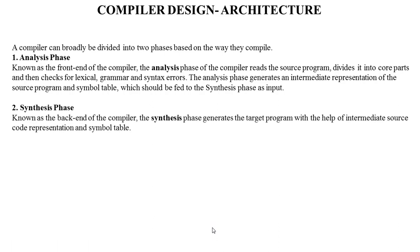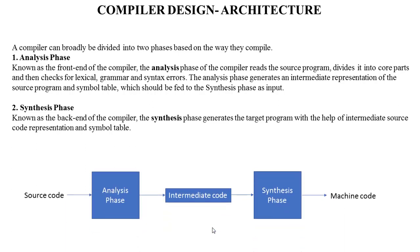The synthesis phase is also known as the back end of the compiler. The synthesis phase generates the target program with the help of the intermediate source code representation and symbol table. Here is the diagram for the architecture of the compiler. First, the source program is given to the analysis phase. The analysis phase produces intermediate code, which is then given to the synthesis phase, which generates the machine code.